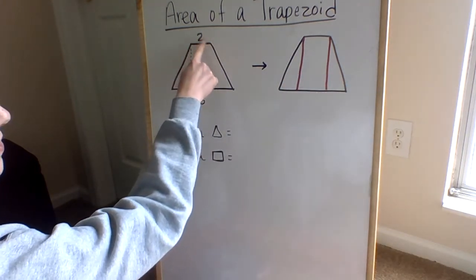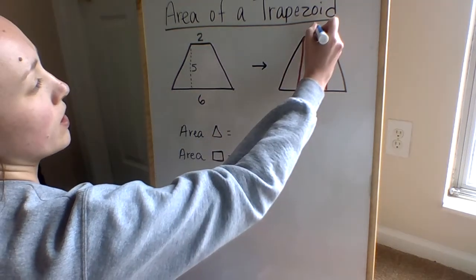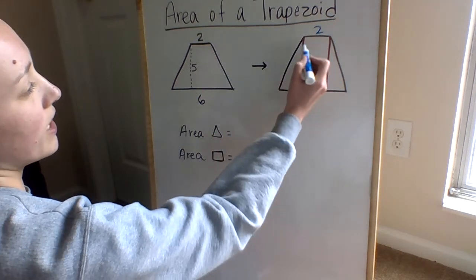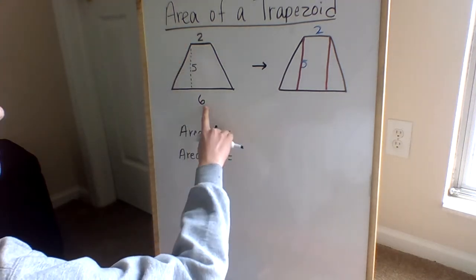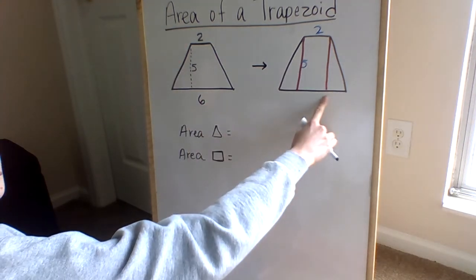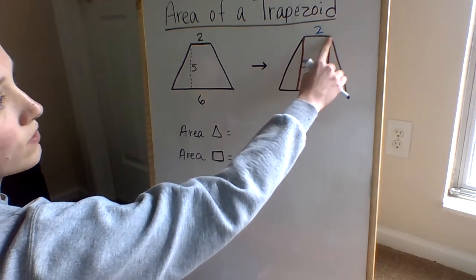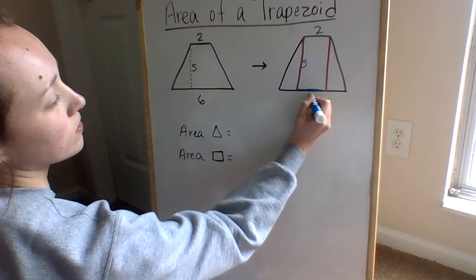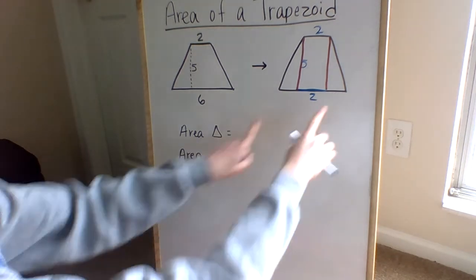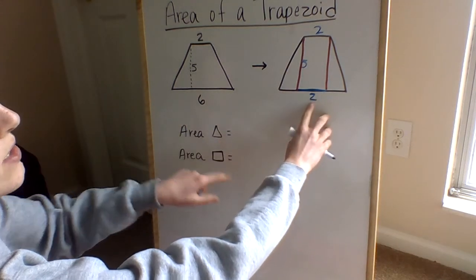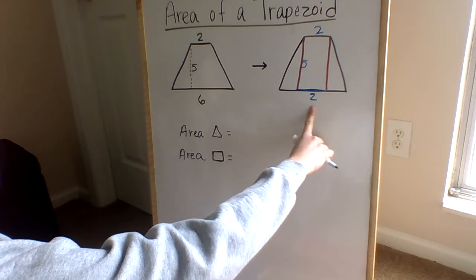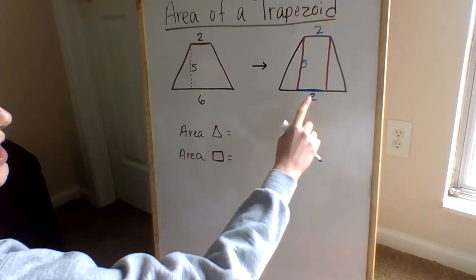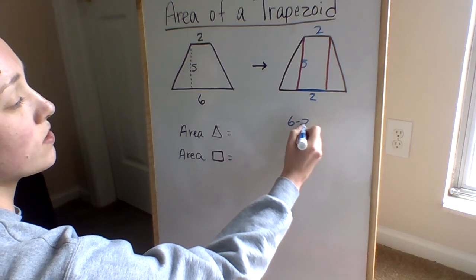Now, we already know that this little section right here is two, and this height right here is five. But now we have to change our six into something else. If we bring this line down, this right here is also going to be two. So in order to find this missing piece, we need to take two away from six. So what is six minus two? Good, that gives us four. So six minus two equals four.